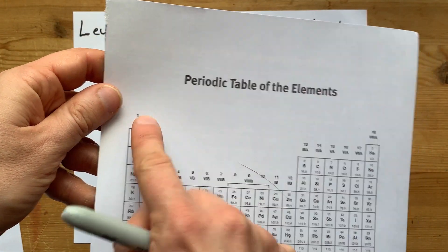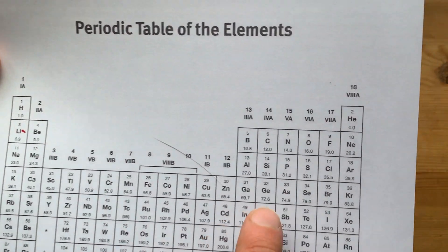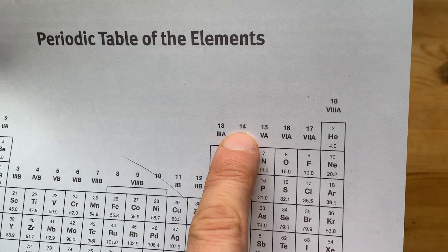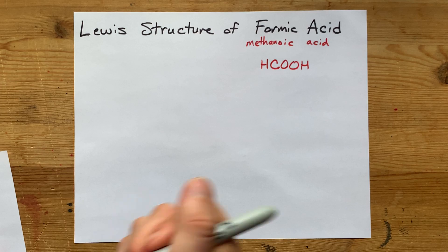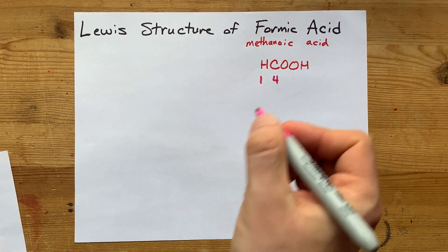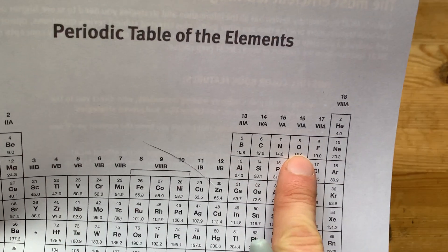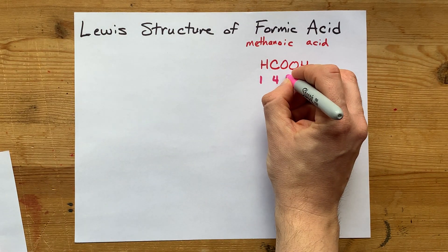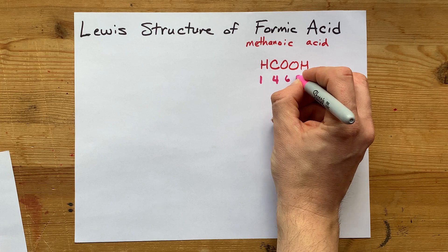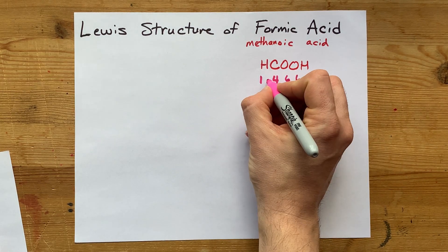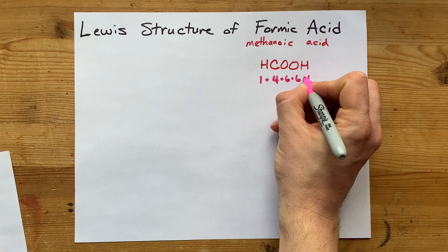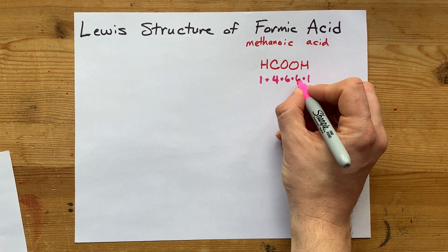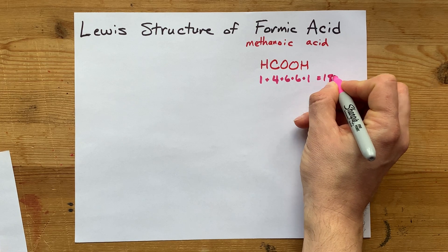Well, hydrogen in group one brings one valence electron with it. Carbon in group 14 brings four valence electrons with it. Oxygen is in group 16, which means it brings six valence electrons with it. And there's another one of those, and there's another hydrogen as well. When I add all of those together, that's 18 electrons total. That's how many I'm going to be allowed to put into my structure by the time I'm done.